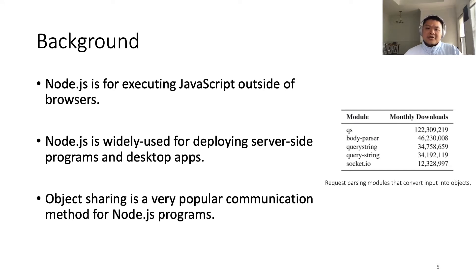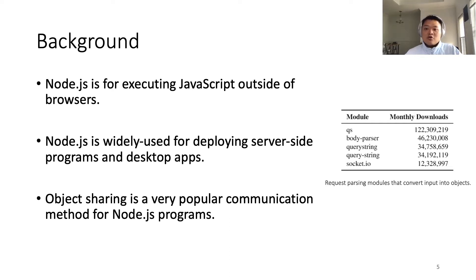For these applications, packing communication data into object representations like JSON is a very common feature. This feature is convenient because with the help of it, Node.js applications can send and receive complex data structures. From the monthly download statistic on the right, we can have a sense of how object sharing is being supported and used in the Node.js ecosystem.